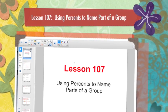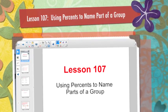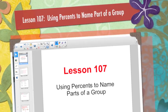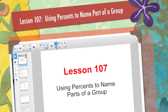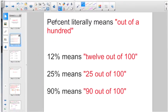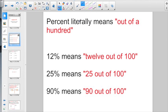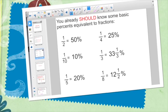Good morning everybody. Welcome to Math Lesson 107. Today we're talking about using percents to name parts of groups. Percent literally means out of 100. If you say 12%, it means you're talking about 12 out of 100. 25% means 25 out of 100. 90% means 90 out of 100, and so on.